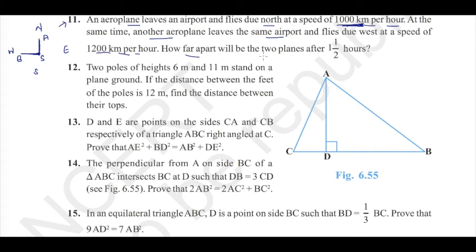How far apart will be the two planes after 1 and a half hours? This is the distance what we need to find, AB. After 1 and a half hours, A might have travelled a distance of 1000 into 1.5. That is, this is velocity and this is time. Velocity into time is distance travelled.